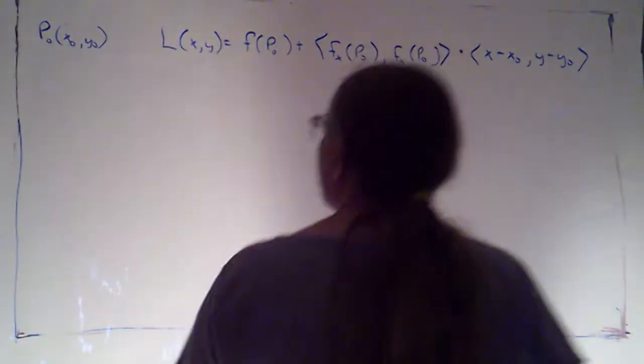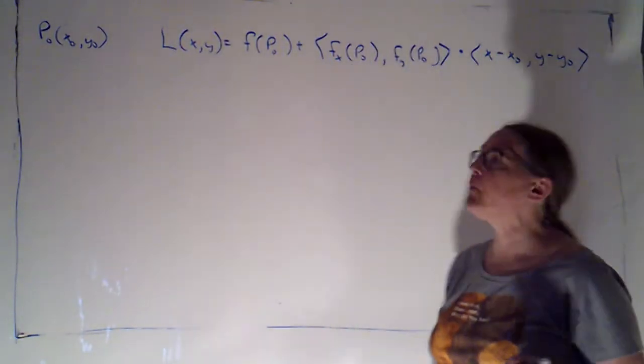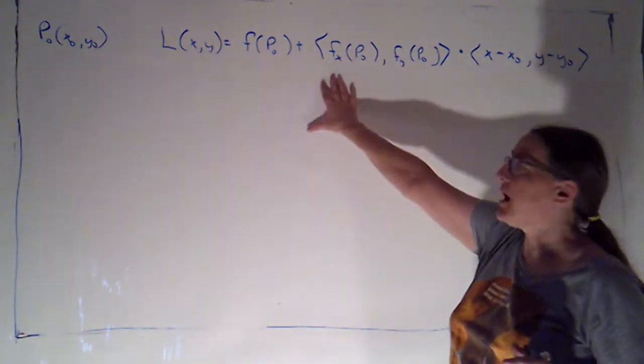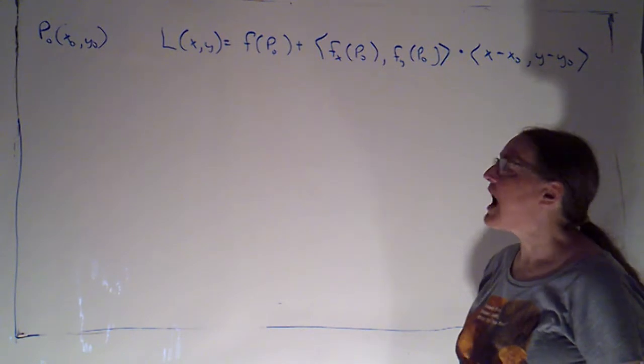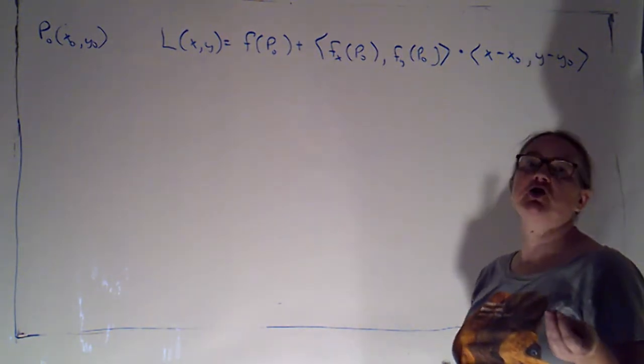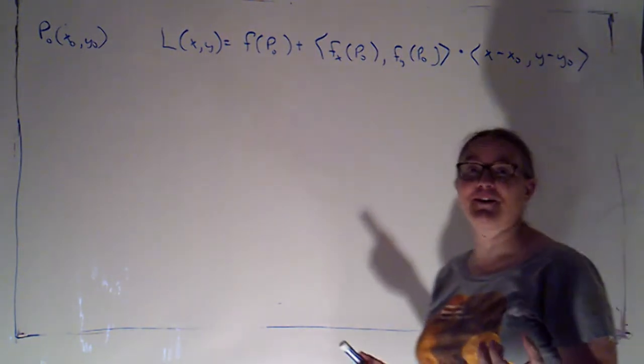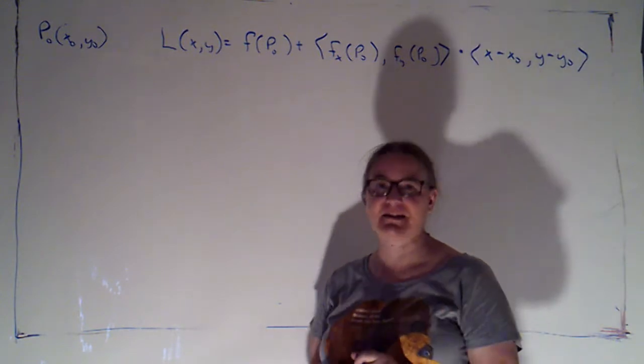I want to introduce a little bit of new notation and vocabulary that'll help us talk more generally about our candidates for the local linear approximation, and then I want to actually apply our definition of differentiability in a specific example.